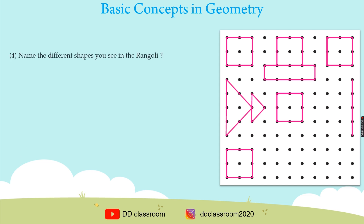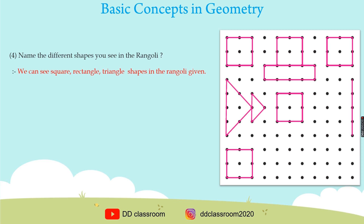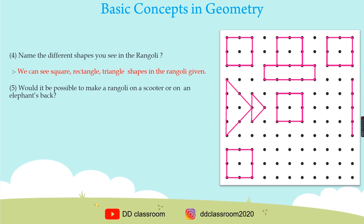Question four: Name the different shapes you see in the rangoli. The answer is we can see square, rectangle, and triangle shapes in the rangoli given. Question five: Would it be possible to make a rangoli on a scooter or on an elephant's back? The answer is it won't be possible to draw a rangoli on a scooter or elephant's back as they have a slope.